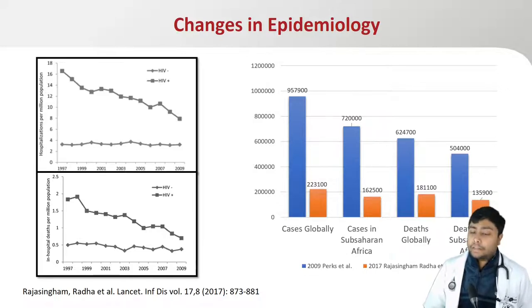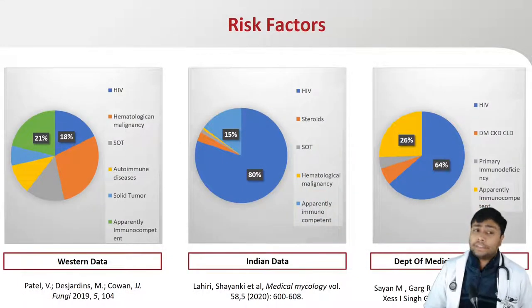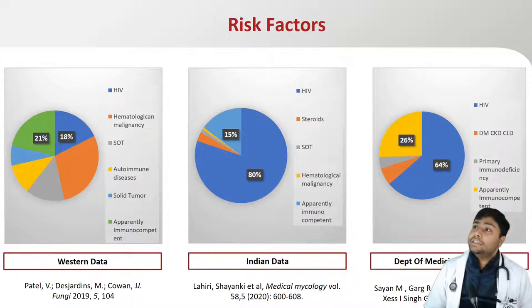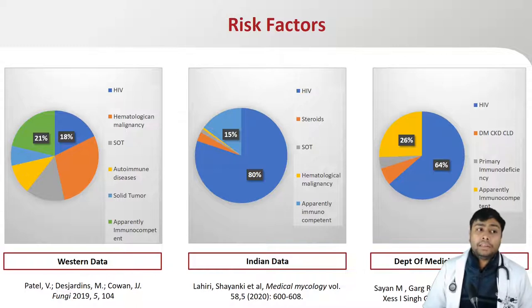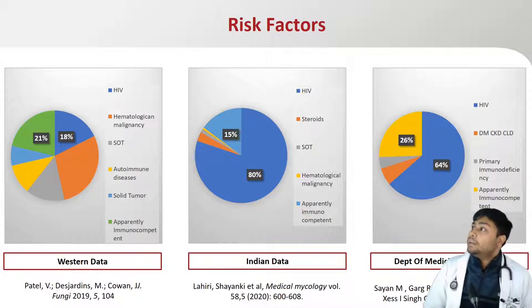Regarding risk factors: in Western data, HIV is the predominant risk factor, along with solid organ transplant, autoimmune diseases, or hematological malignancies — with 21% of patients being immunocompetent. In Indian data, 15% are immunocompetent, and HIV remains the dominant risk factor. In our departmental data from AIIMS, though HIV is the dominant risk factor, we are getting 26% immunocompetent patients.